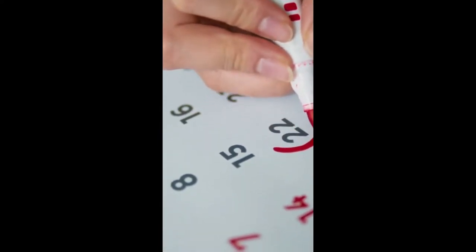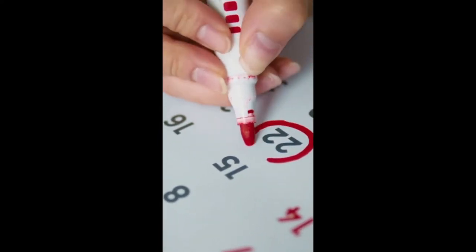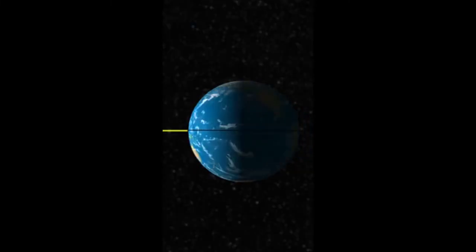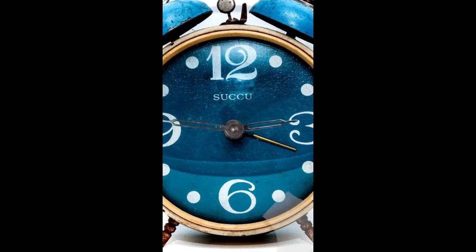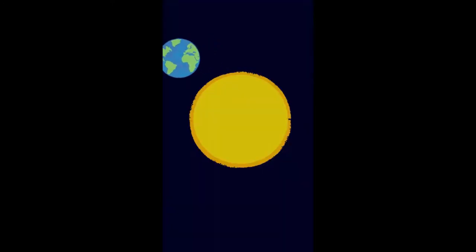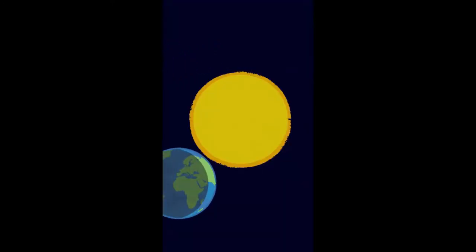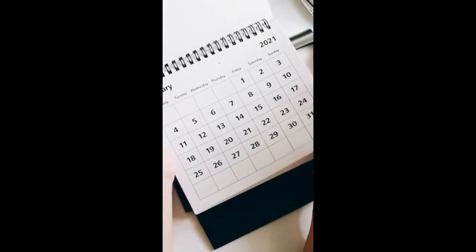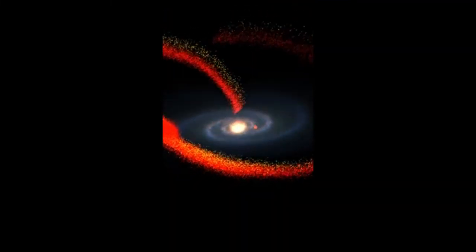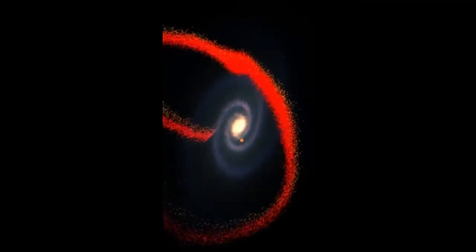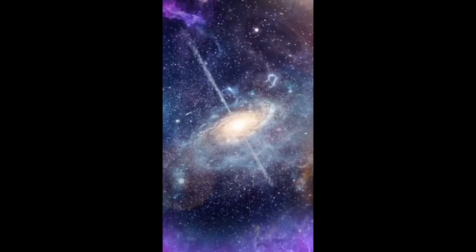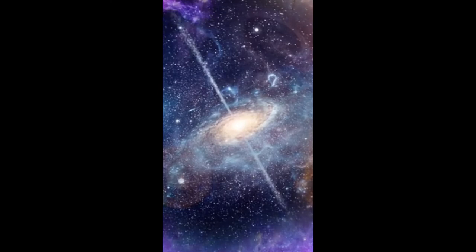Why do you think that every week we have 7 days? For example, Earth takes 24 hours to rotate and 365 days to orbit the sun, which we call 1 year. And our solar system orbits around the galaxy in what we call cosmic years — about 2.5 million years. So what is this concept of a week?